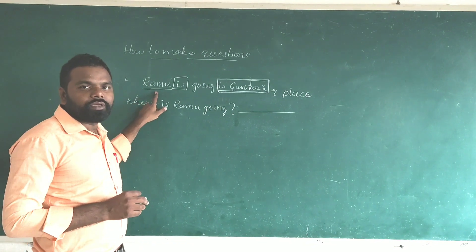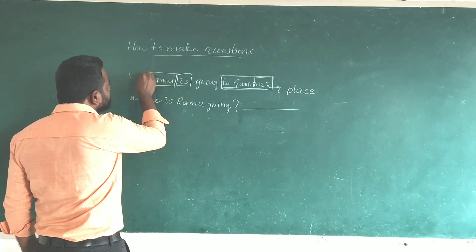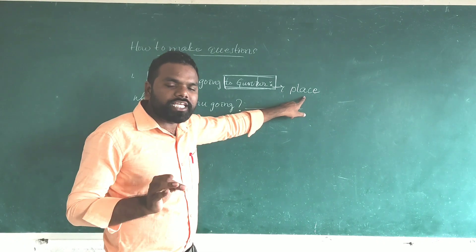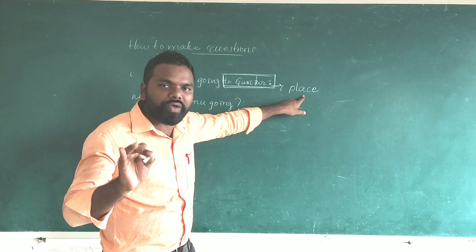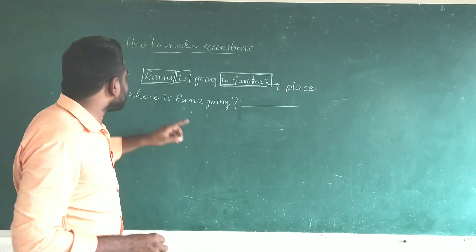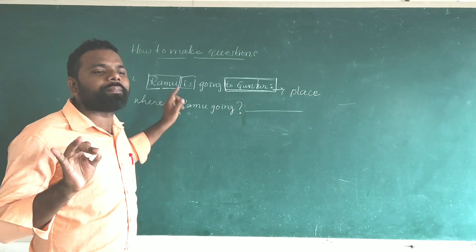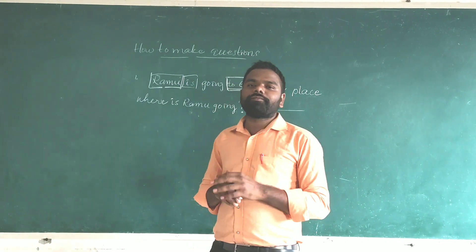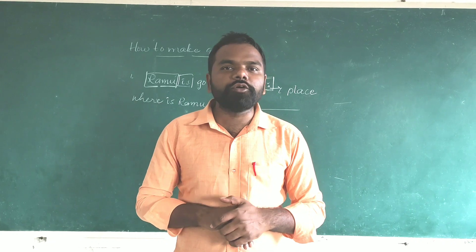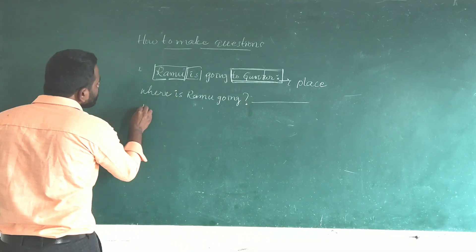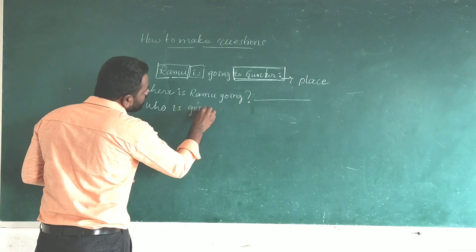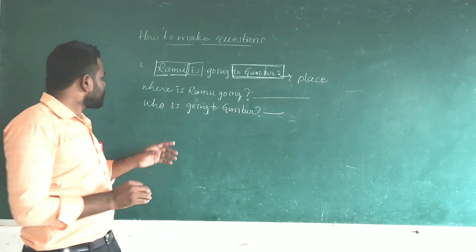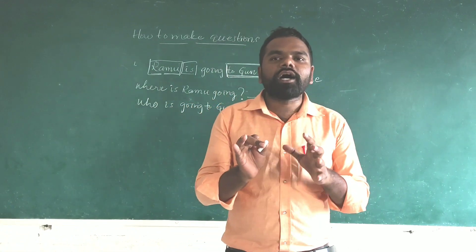Now we are going to underline Ramu. The underlined part — Ramu — we need to get as an answer. Before, we underlined Gundur, which indicates place, so the WH question was 'where.' Now I underline Ramu. Ramu indicates a person. When Ramu is a person, what type of question do we use? We use 'who.' When it is a person, we use 'who' as a WH question. So: Who is going to Guntur? This is the way how to make the WH question.